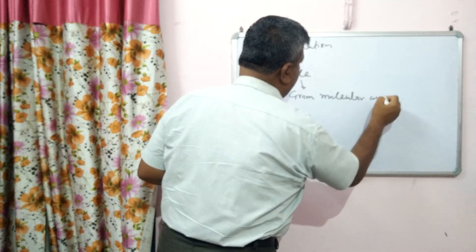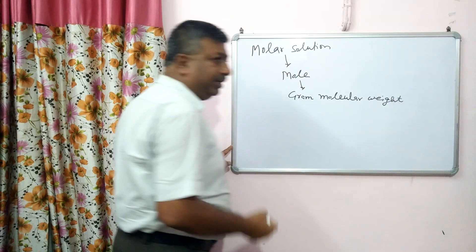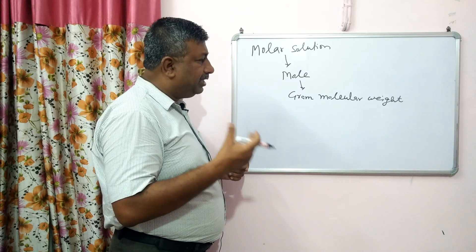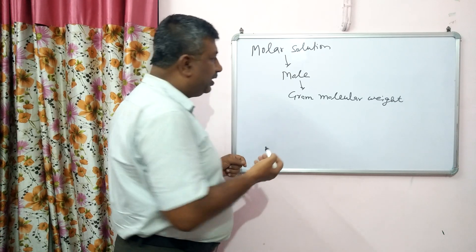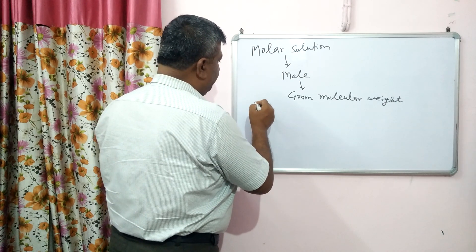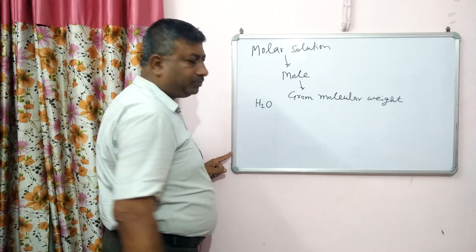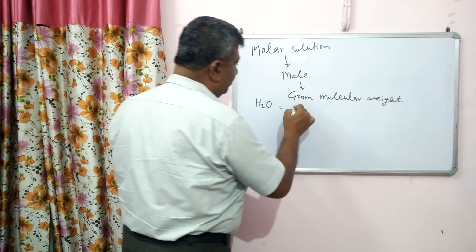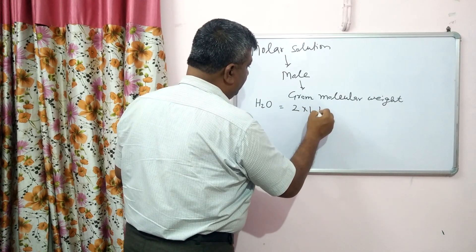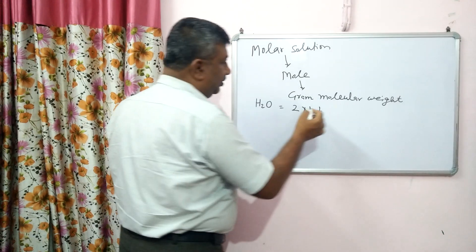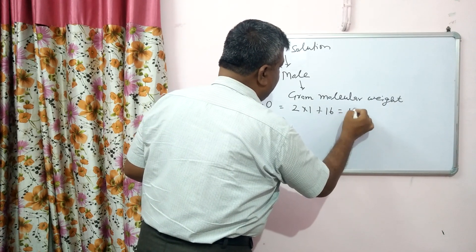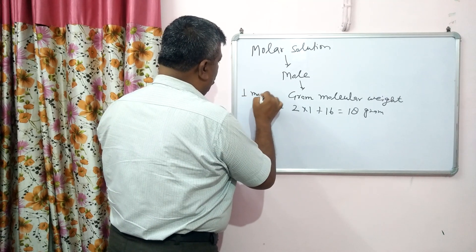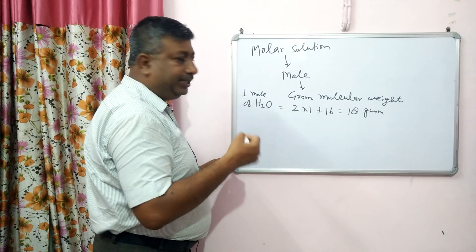It may be confusing — what is gram molecular weight? If we calculate or add the atomic weights of a substance, that gives the gram molecular weight. For example, if we talk about water: the atomic weight of hydrogen is 1 and there are 2 atoms, so 2×1, plus oxygen with atomic weight 16. So it is 18 grams. This means 1 mole of water equals 18 grams.